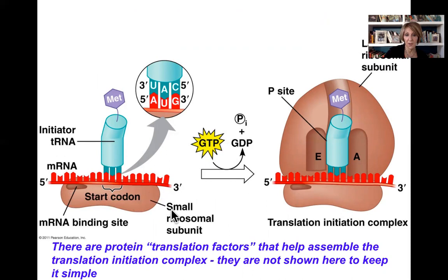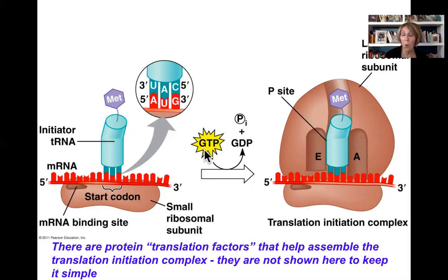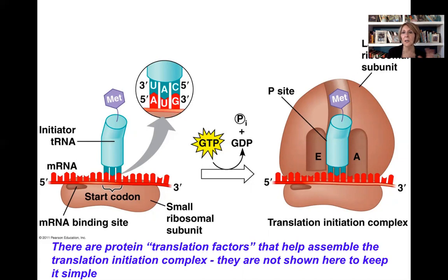Here is the small ribosomal subunit, the messenger RNA transcript, and the initiator transfer RNA carrying methionine — the first amino acid is always methionine. We can see complementary base pairing between the red messenger RNA and the turquoise transfer RNA. This requires energy in the form of GTP. Translation factors — proteins analogous to transcription factors — guide and moderate the system to complete the translation initiation complex.